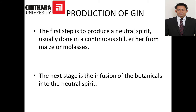Now, how is Gin produced? The first step is to produce a neutral spirit — a spirit which does not have any flavor or aroma. It can be produced in a continuous still or patent still distillation, either from maize or molasses.